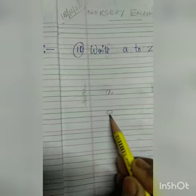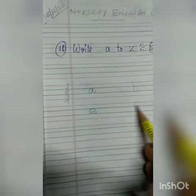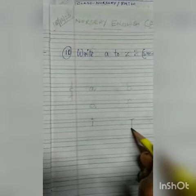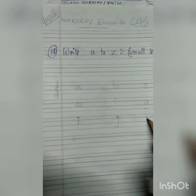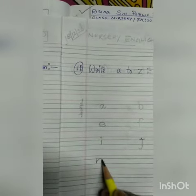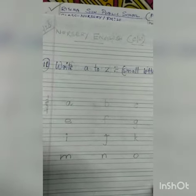e, f, g, h — now i — all are in small letters. j, k, l, m, n, o, p — now continuing.